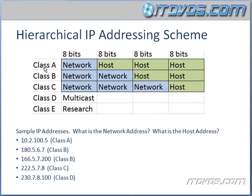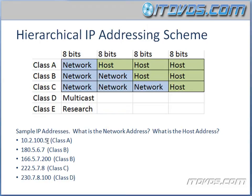For Class A addresses, the first eight bits are going to be your network — that's the first octet. Then the next three octets are your host bits. This is also called your network address and your host or node address. Every host in a network is going to have the same network address, but every host is going to have a unique host part. So for the Class A address 10.2.100.5, the 10 is the network address and the 2.100.5 is the host or node address.